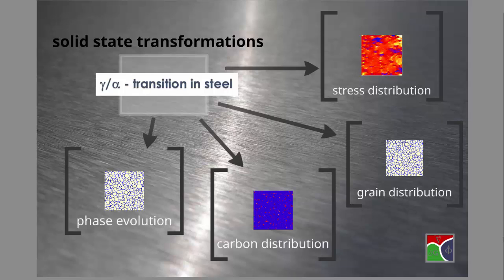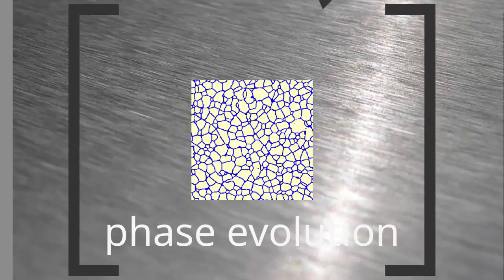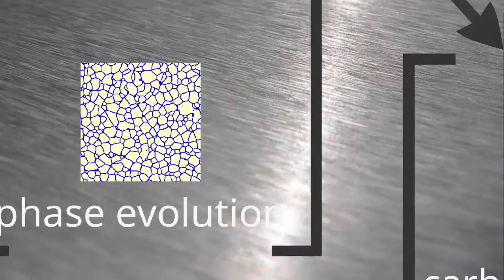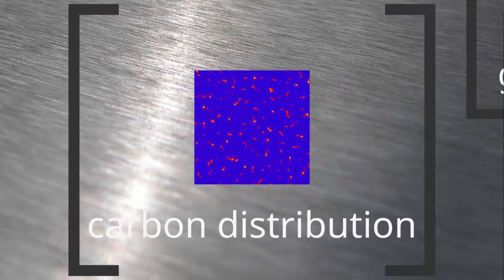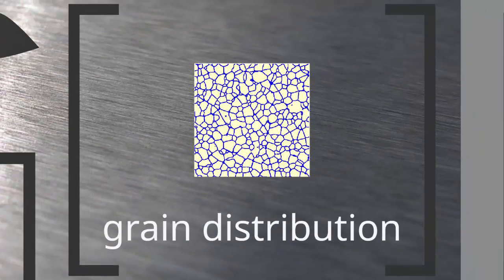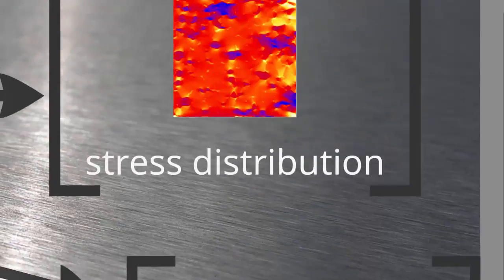Solidification is not the only thing important for microstructures, but many things happen later during solid state transformations. There are options to model also solid state transformations with multiphase field methods. We will go on to these kinds of models in a separate lecture.